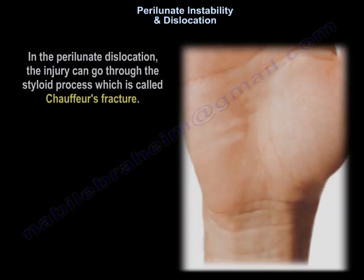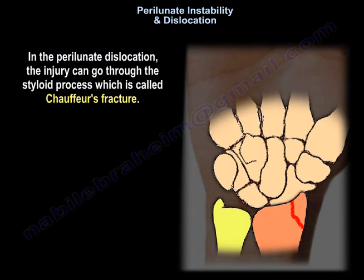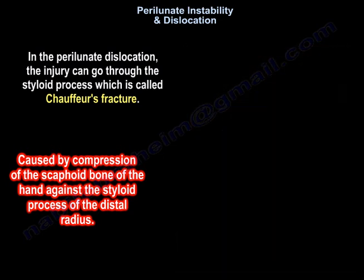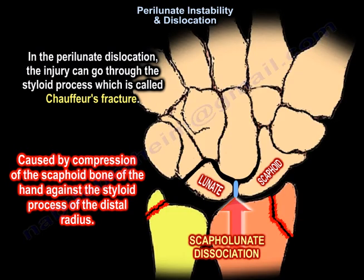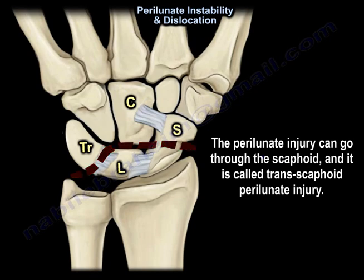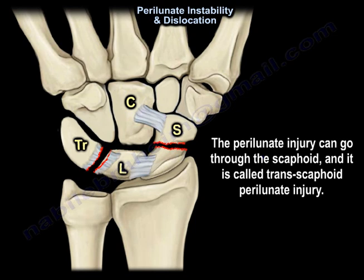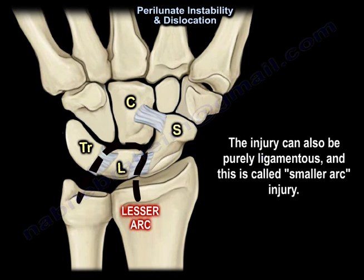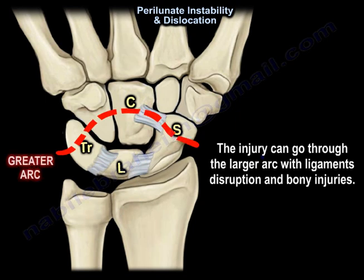In the perilunate dislocation, the injury can go through the styloid process — that is called a chauffeur fracture. Or it can go through the scaphoid, called transscaphoid perilunate. The injury can also be purely ligamentous, called the smaller arc. The injury can go through the larger arc with ligament disruption and bony injuries.